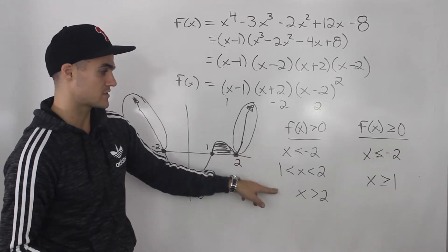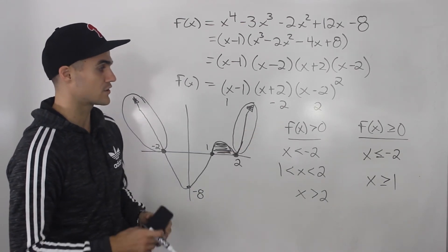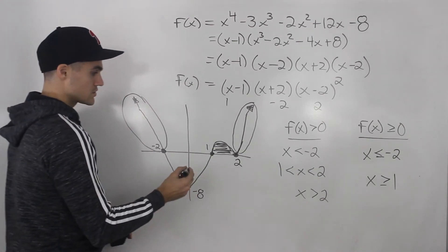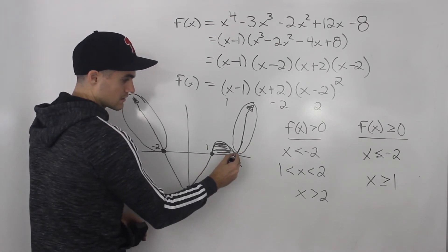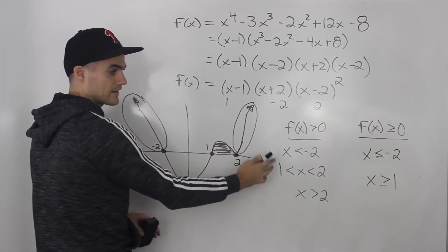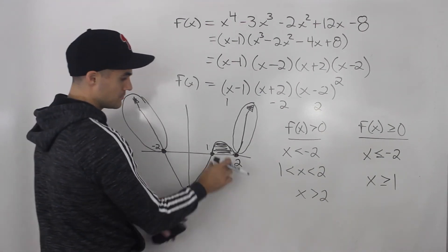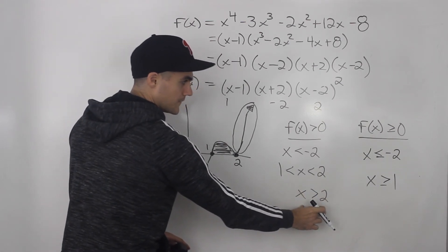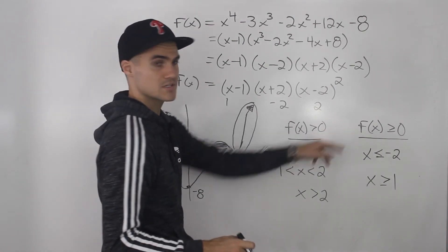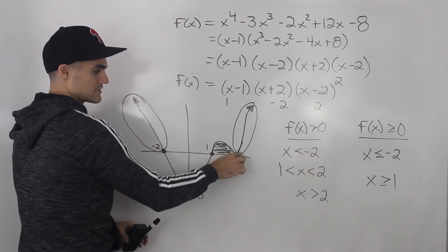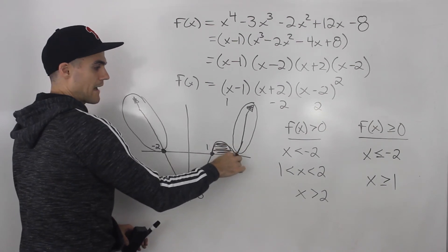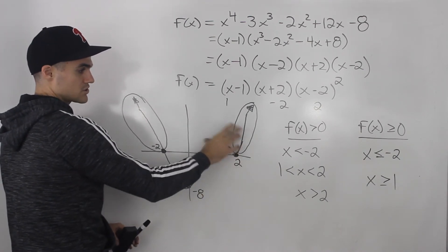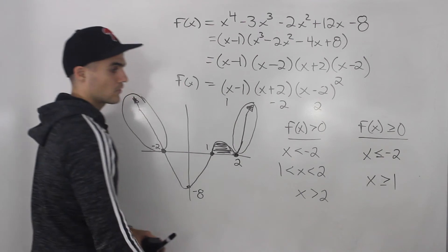The trick is that for the greater than or equal to 0 case, we combined those two intervals because the function never becomes negative after x equals 1 — it either has a positive y-value or a y-value of 0 at the bounce point. For the strictly greater than 0 case, we have to split it up at the bounce, since at x equals 2 the y-value is 0 which can't be included.